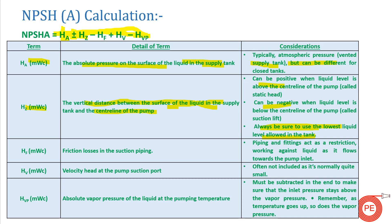The next term is HF — frictional losses in the suction piping. Whenever a pump is sucking from a tank, there are many fittings involved in the piping system up to the pump suction port. There will be frictional losses in those fittings. HF is subtracted from HA plus or minus HZ, so the frictional losses occurring in the piping system up to the suction port of the pump represent HF.